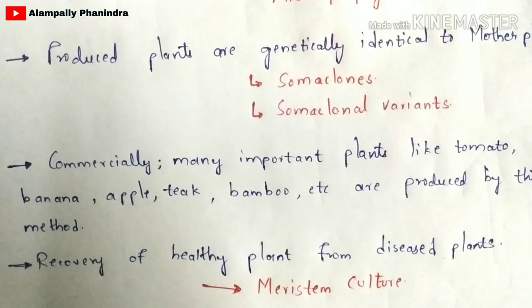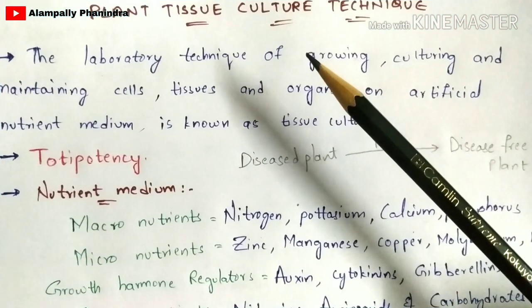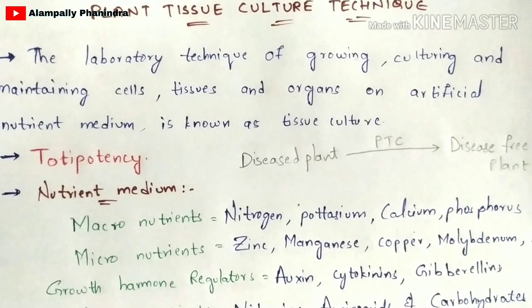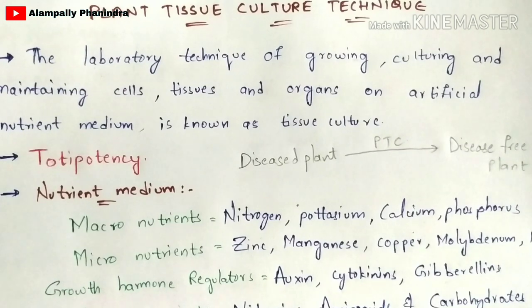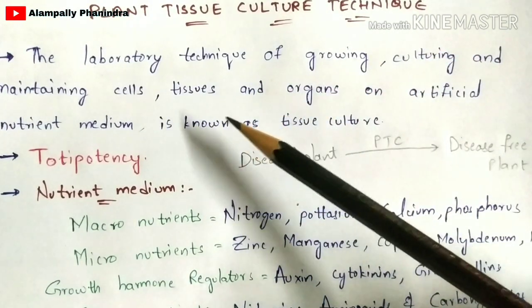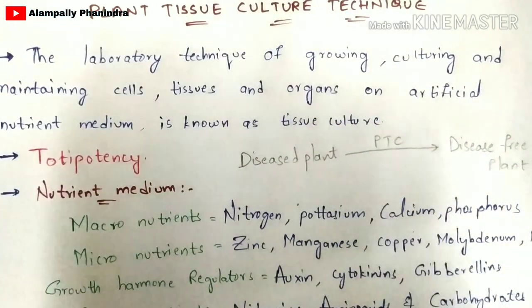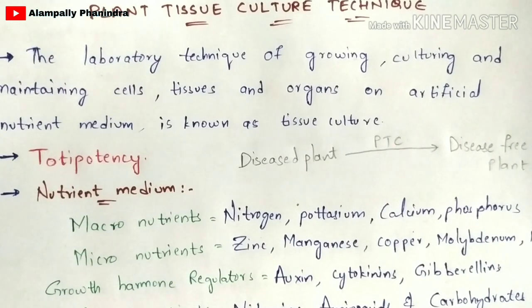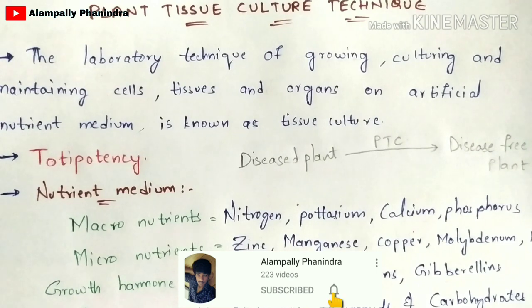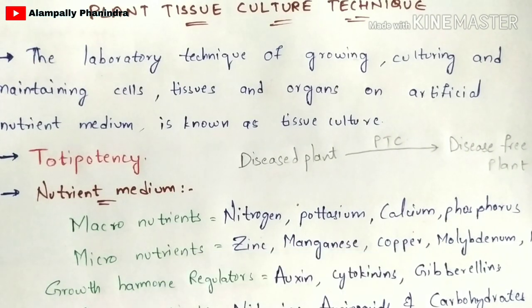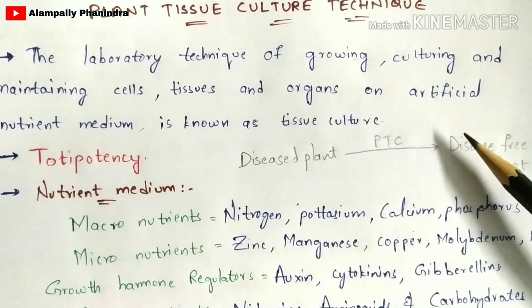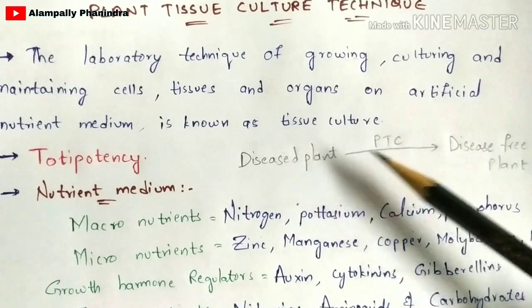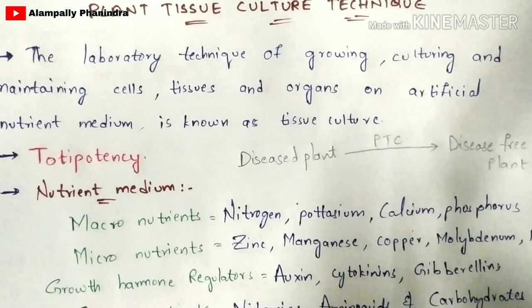Now let us learn the definition of plant tissue culture. You can write this definition in different ways. One definition is: the laboratory technique of growing, culturing, and maintaining cells, tissues, and organs on artificial cultured medium is called plant tissue culture. Another definition is: the production of disease-free plants from a diseased mother plant is called plant tissue culture. Or: the formation of a new plant from the explant by absorbing nutrients in the nutrient medium is called plant tissue culture.